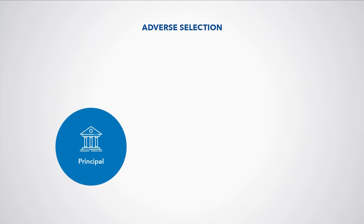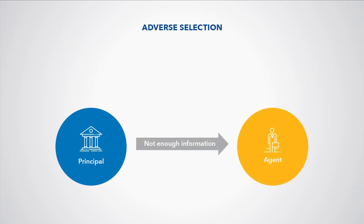Adverse selection arises when the principal does not have all the necessary information about the agent, and therefore cannot appropriately control for the differences in risk across agents. In credit markets, lenders are the principal and borrowers are the agents. Lenders worry about lending to high-risk borrowers who they cannot easily tell apart from low-risk borrowers.